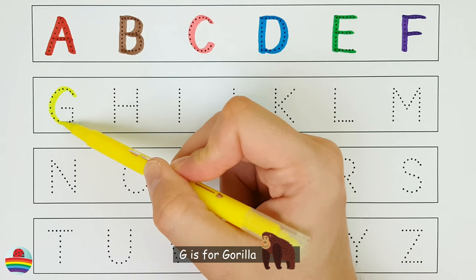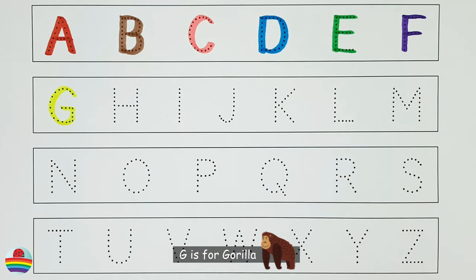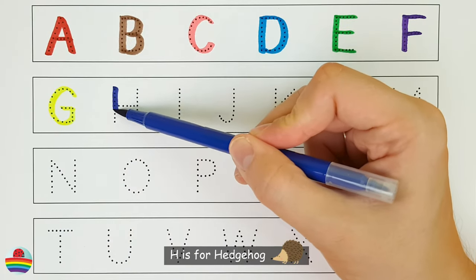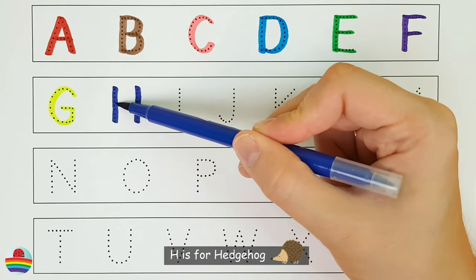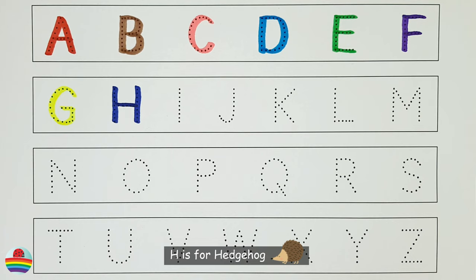G. G is for gorilla. H. H is for hedgehog.